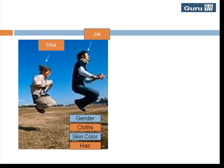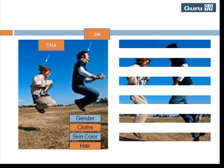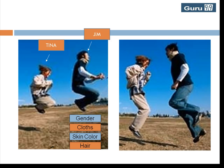So, when you were shown the second picture without the name markers, even though the position of the human objects on screen had changed, by comparing the properties learned earlier — like gender, clothes, and so on — with the properties of human objects on screen, you could identify the names accurately.